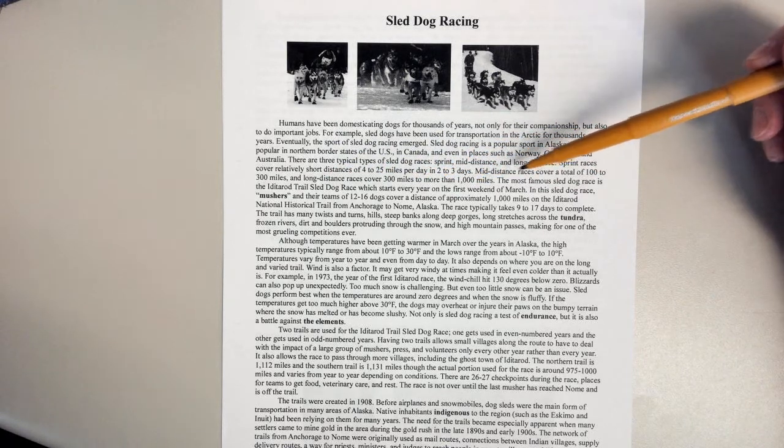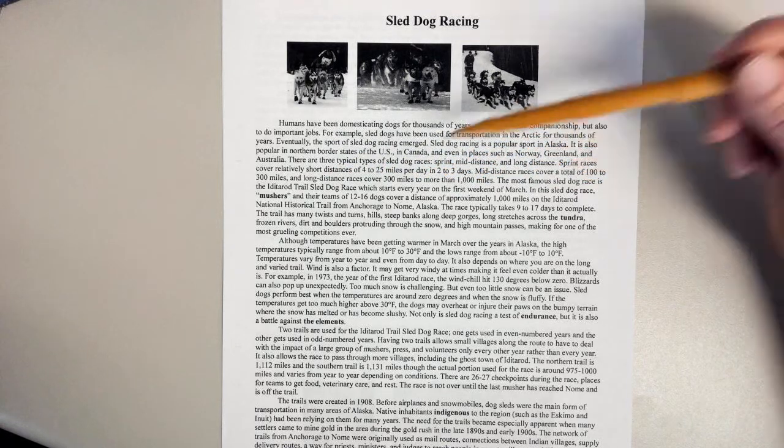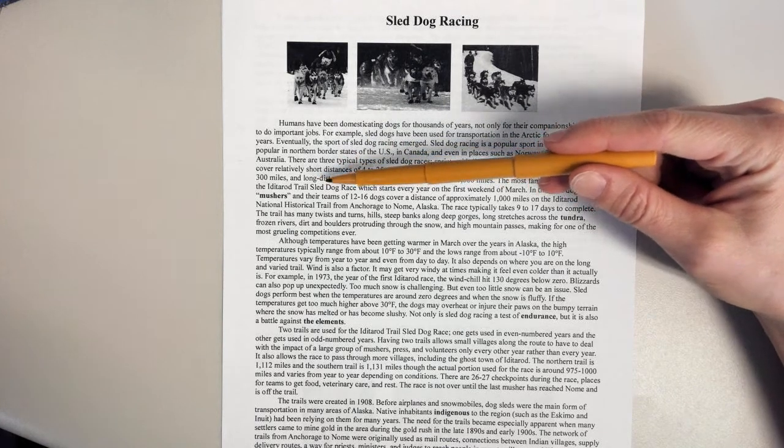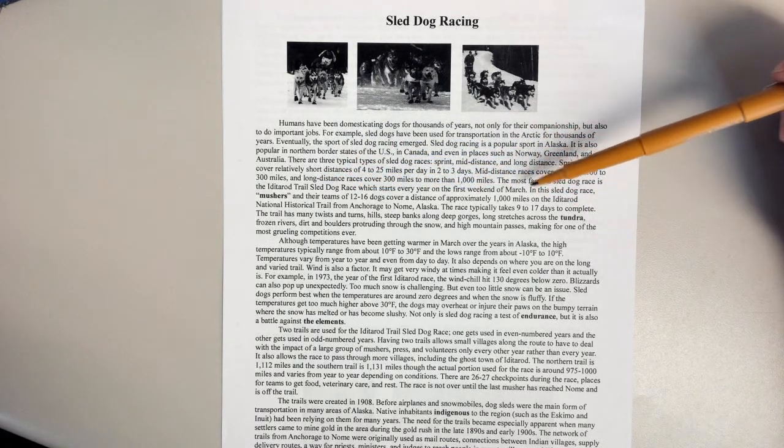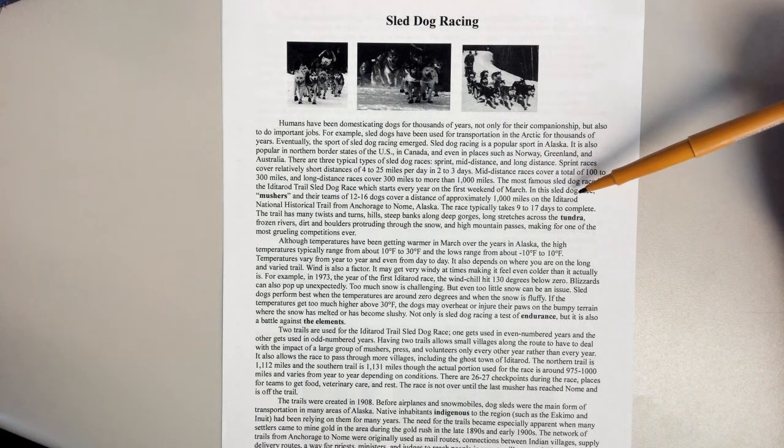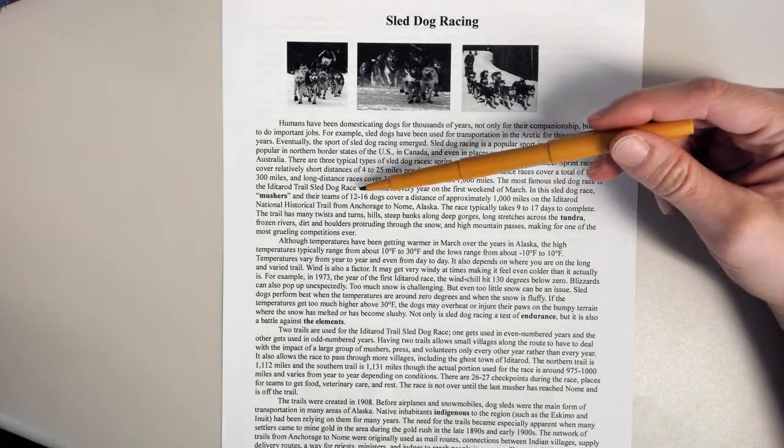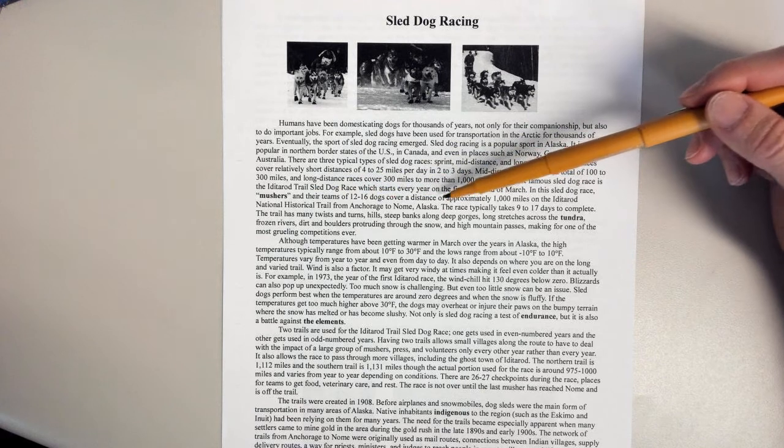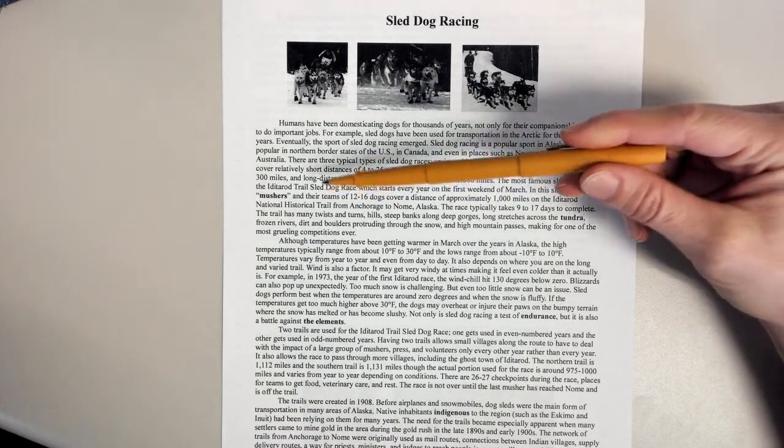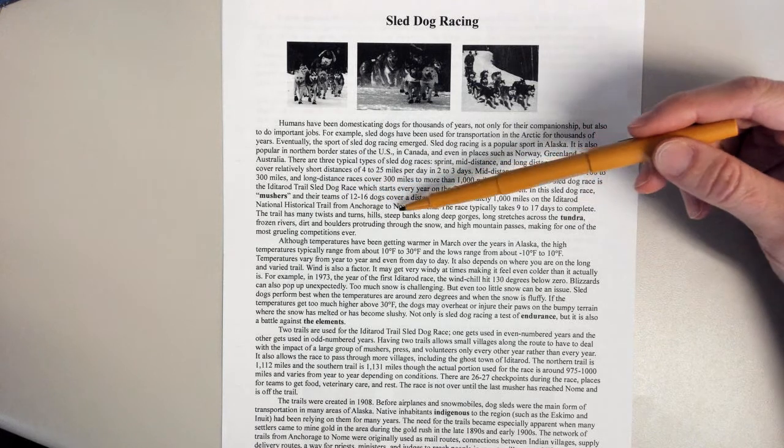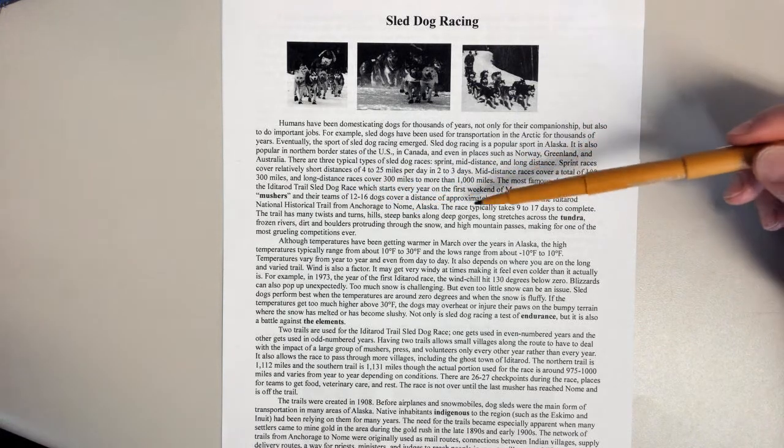The most famous sled dog race is the Iditarod Trail Sled Dog Race, which starts every year on the first weekend of March. In this sled dog race, mushers and their teams of 12 to 16 dogs cover a distance of approximately 1,000 miles on the Iditarod National Historical Trail from Anchorage to Nome, Alaska.